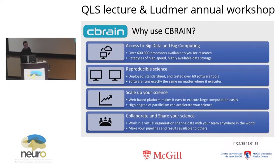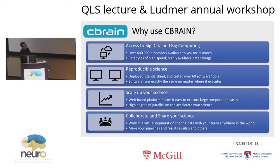Why should you consider using C-Brain? Many of you are students or researchers who already know how to run your stuff, use the command line, and do your research. But here are a couple of reasons why a platform like C-Brain is important, even for experienced users. As part of C-Brain, you get access to big data and big computing — over 600,000 processors available, growing every year, allocated through C-Brain for researchers mostly in Canada and at McGill, as well as petabytes of high-speed storage. You get access to computing and storage without needing to maintain or pay for it.